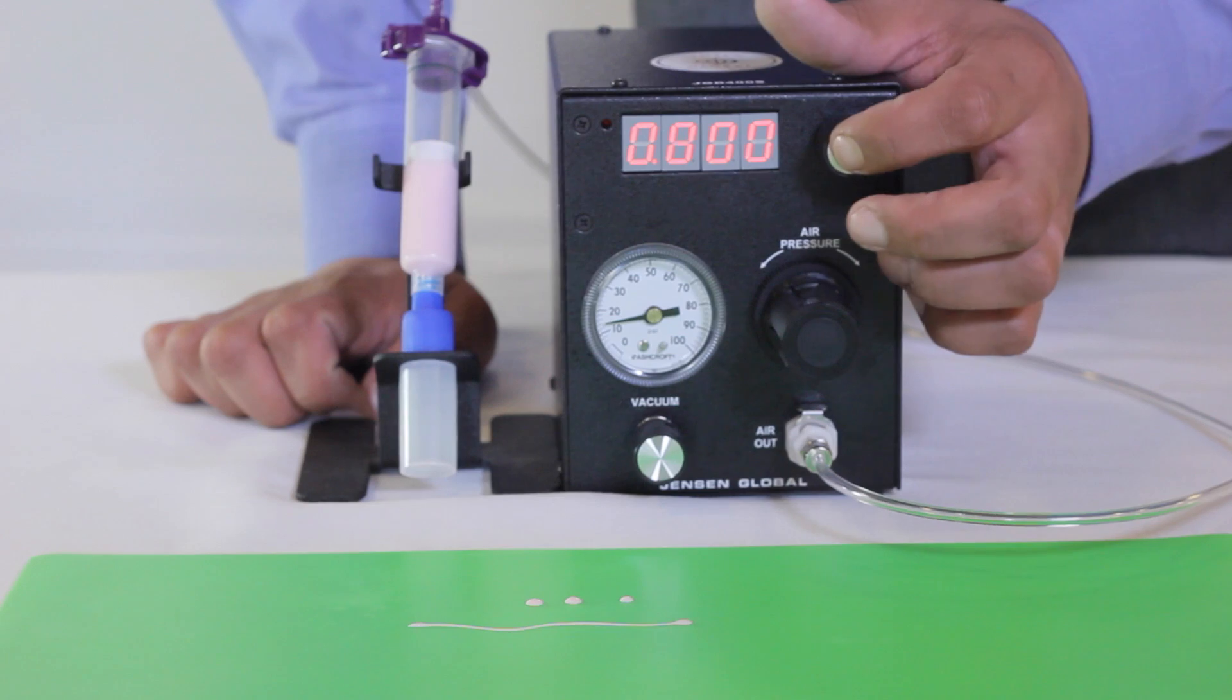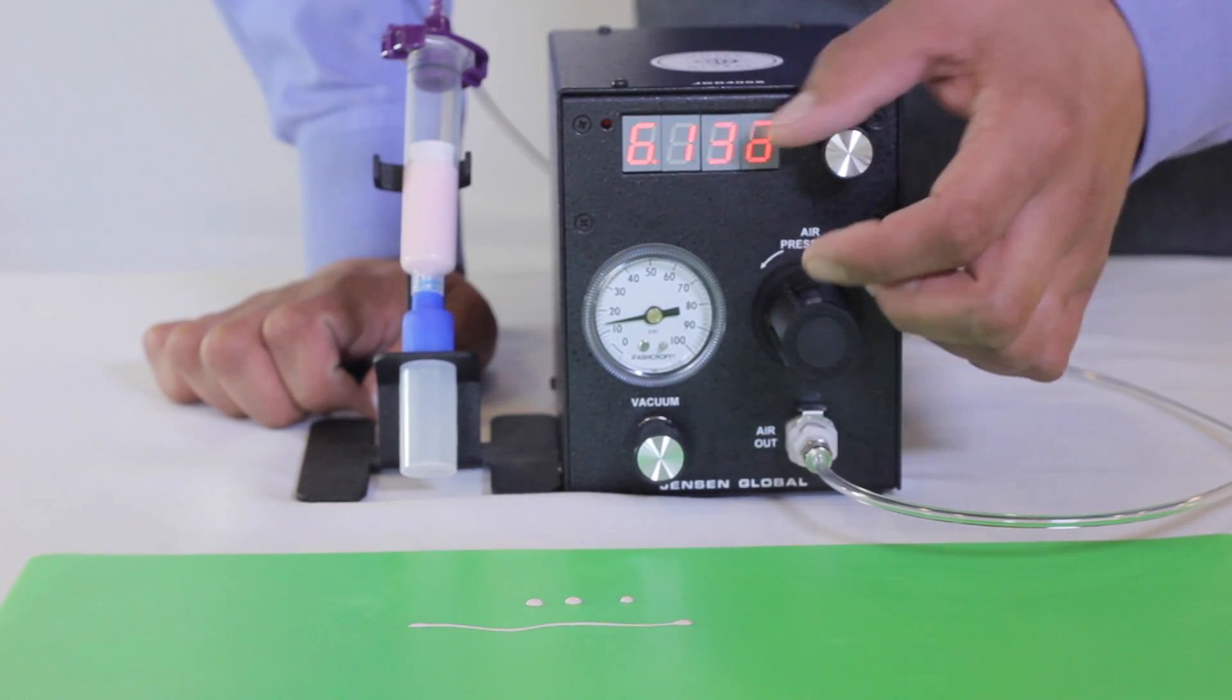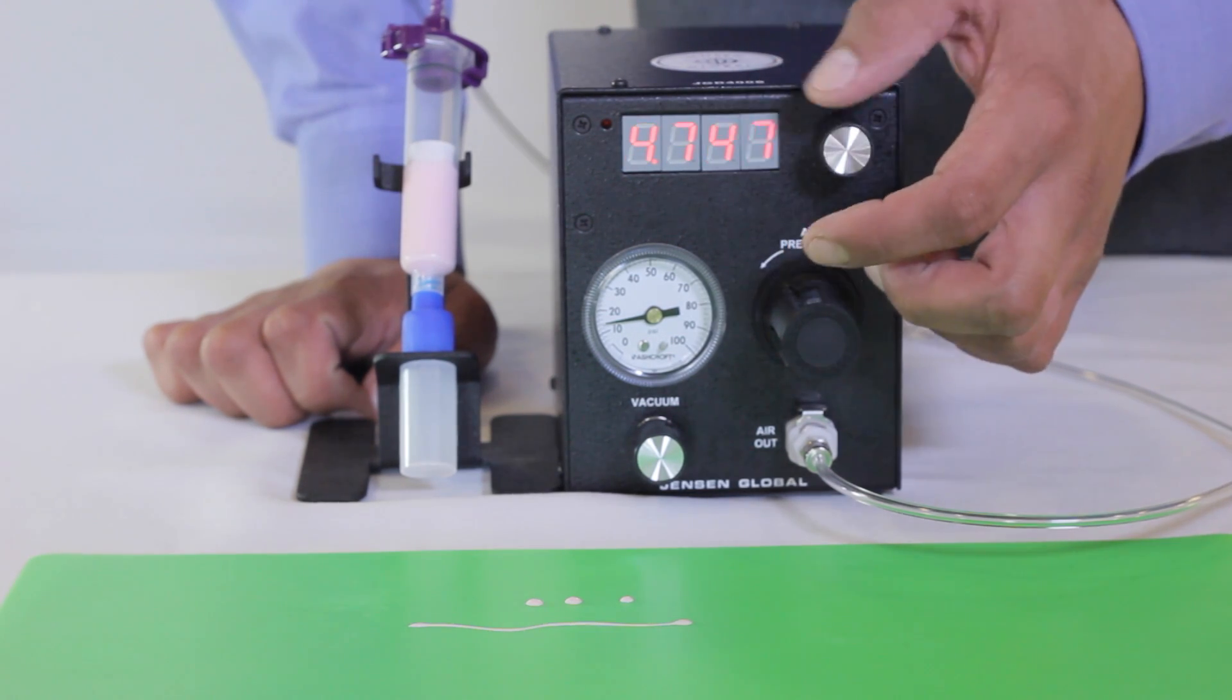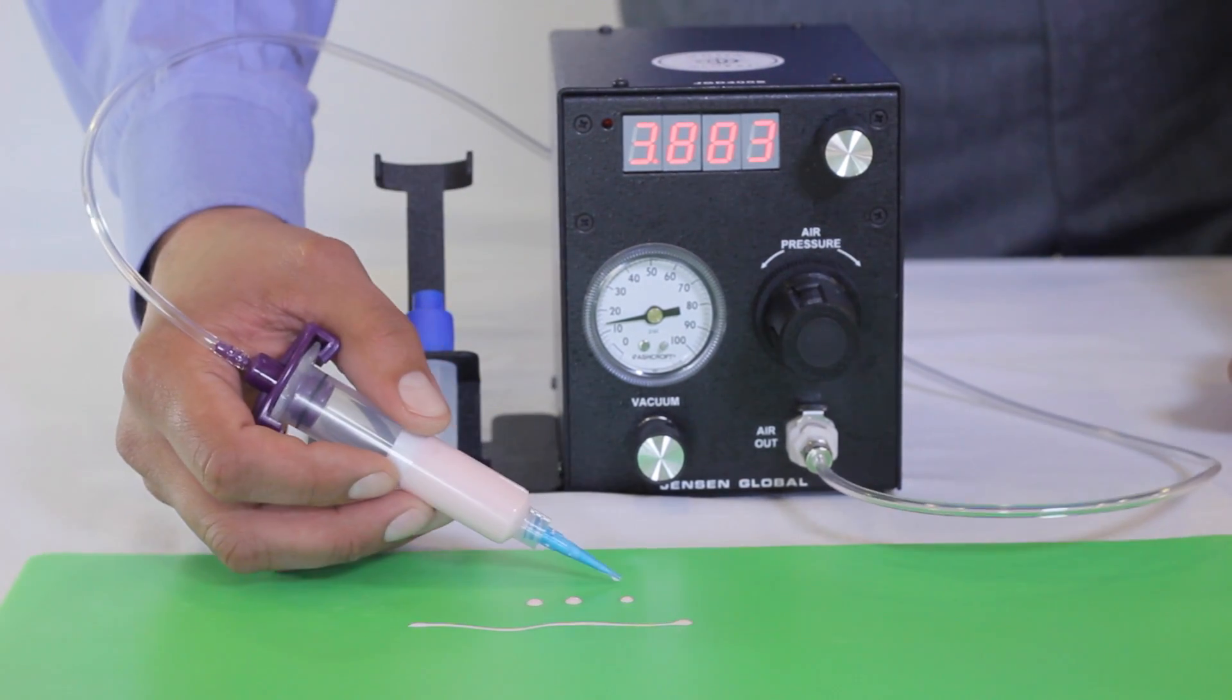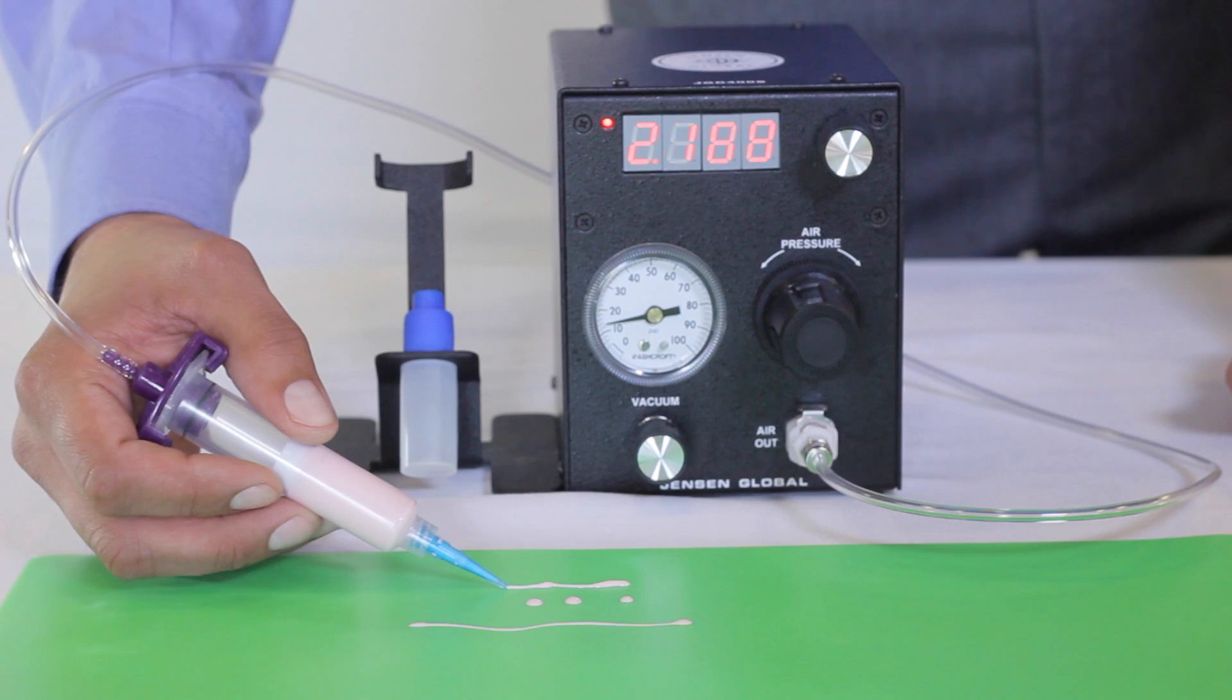Switch to auto mode by pressing the center of the knob, which allows you to set a metered dispensing time. When the time is set, you must actuate the foot pedal or finger switch to lock in that time until the user modifies it.